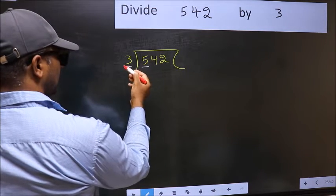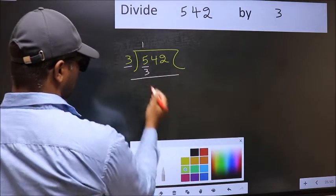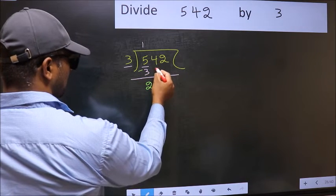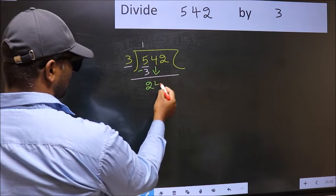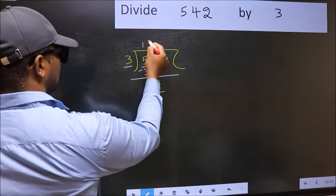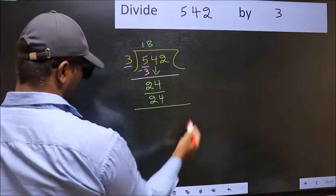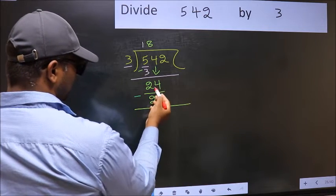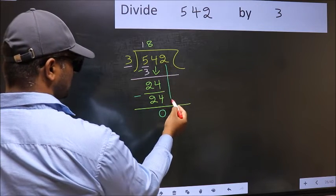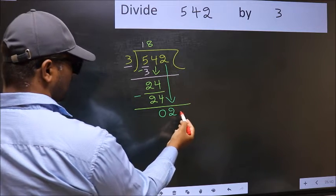A number close to 5 in the 3 table is 3 once 3. Now you should subtract 5 minus 3 equals 2. Next, bring down the beside number, so 4 down. Now 24. When do we get 24 in the 3 table? 3 eights 24. Now you should subtract 24 minus 24 equals 0. After this, bring down the beside number, so 2 down.